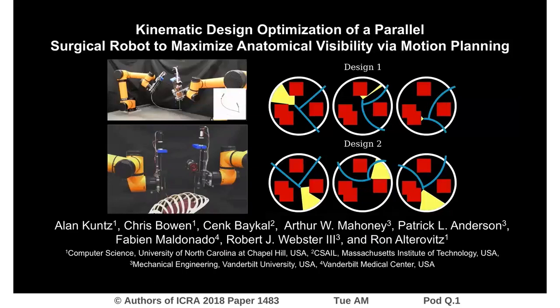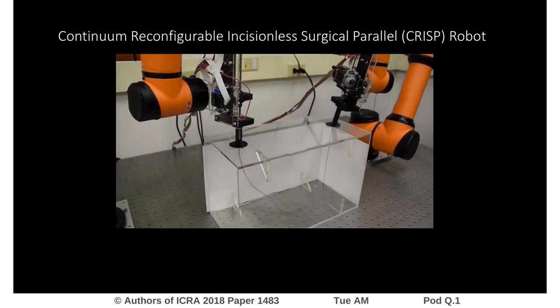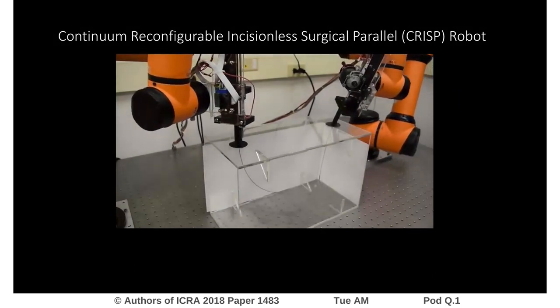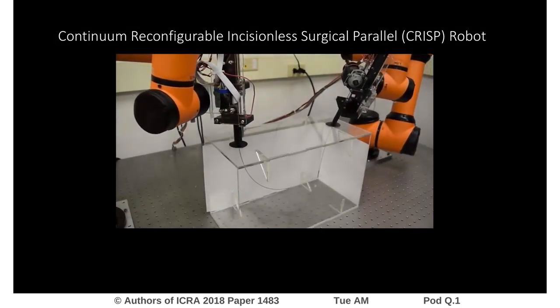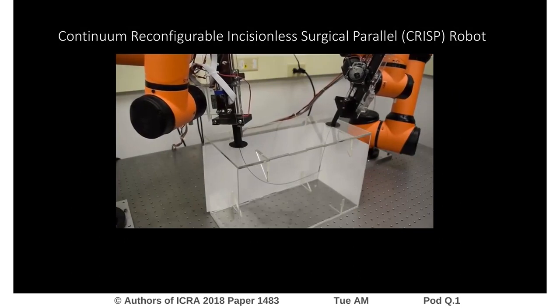In this work, we present a method to optimize kinematic design parameters for a parallel surgical robot in order to maximize the ability of the robot to visualize relevant anatomy inside a patient's body. We consider optimizing kinematic design parameters for the Continuum Reconfigurable Incisionless Surgical Parallel Robot, or CRISP robot.